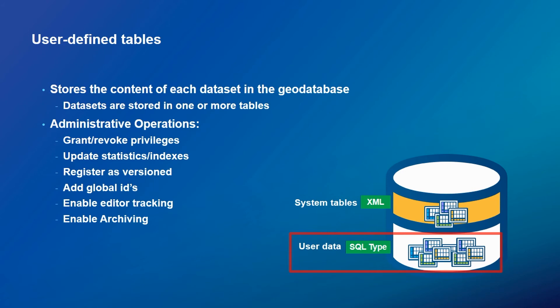The second type of tables are the user-defined tables. This is what we usually see when we connect to an enterprise geodatabase. You can have both tabular data, feature classes, or other dataset types. The administration operations on this data usually change the state or structure of the data, like adding fields, deleting fields, renaming fields, granting and revoking privileges, and adding geodatabase behavior like enabling editor tracking and archiving.